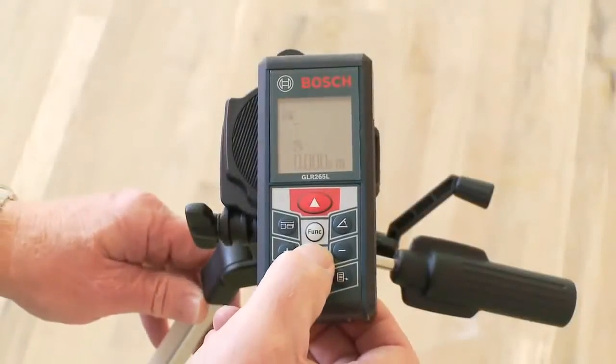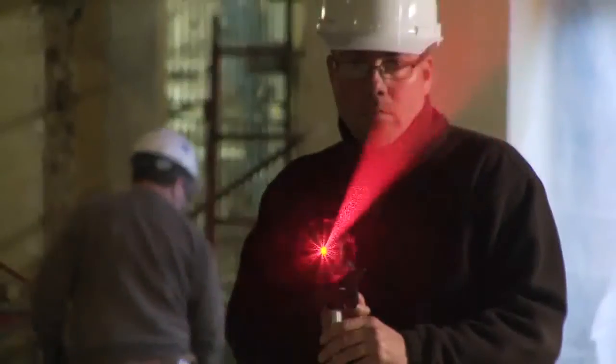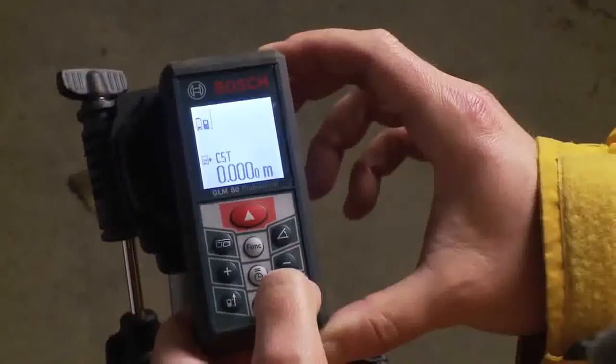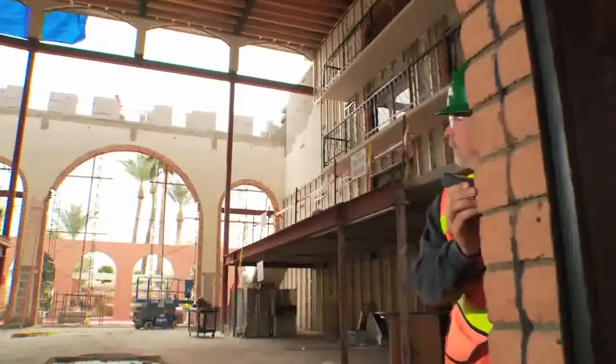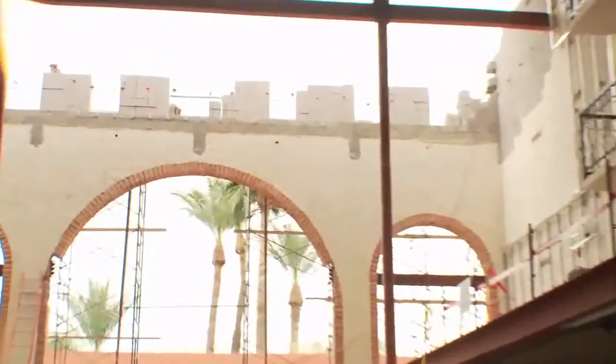The GLM-80 is a smart tool that can measure at the speed of light and with an accuracy of 1/16th inch and operation to a distance of 265 feet.